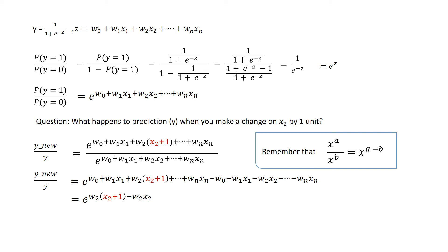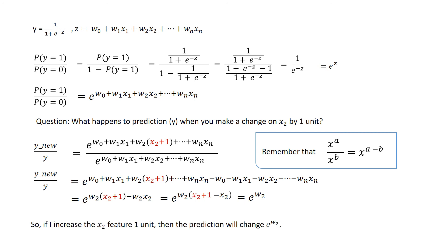The simplified form is e to the power of w2 times (x2 plus 1) minus w2 times x2. Both terms in the power are multipliers of w2, so we can factor: e to the power of w2 times ((x2 plus 1) minus x2). Since (x2 plus 1) minus x2 equals 1, the result is e to the power of w2. So if you increase feature x2 by 1 unit, the prediction ratio changes by e to the power of w2. That is feature importance in logistic regression — a feature is as important as e to the power of its coefficient w2.